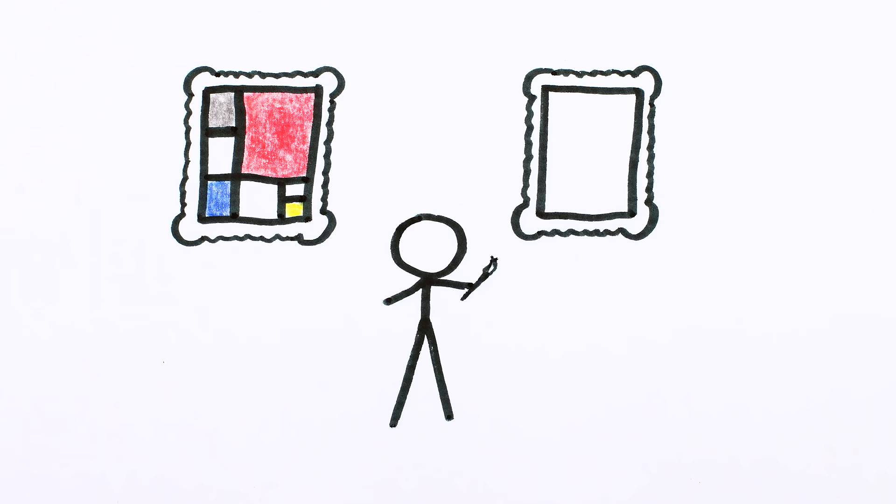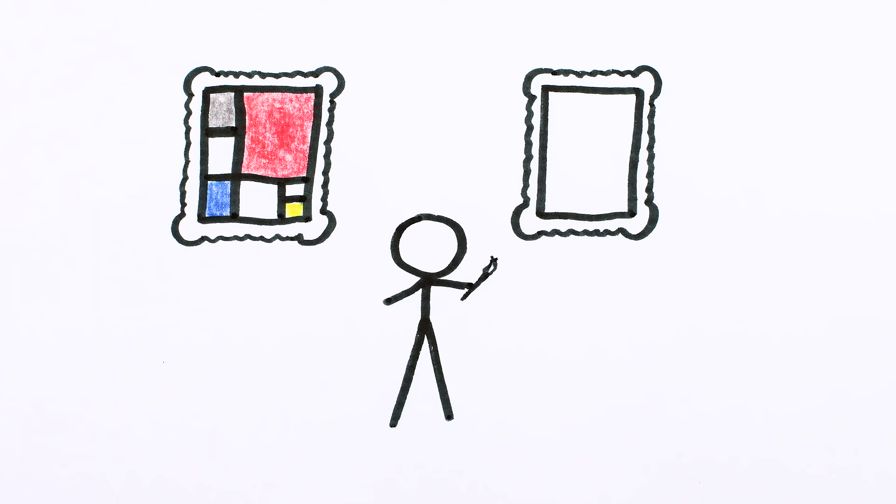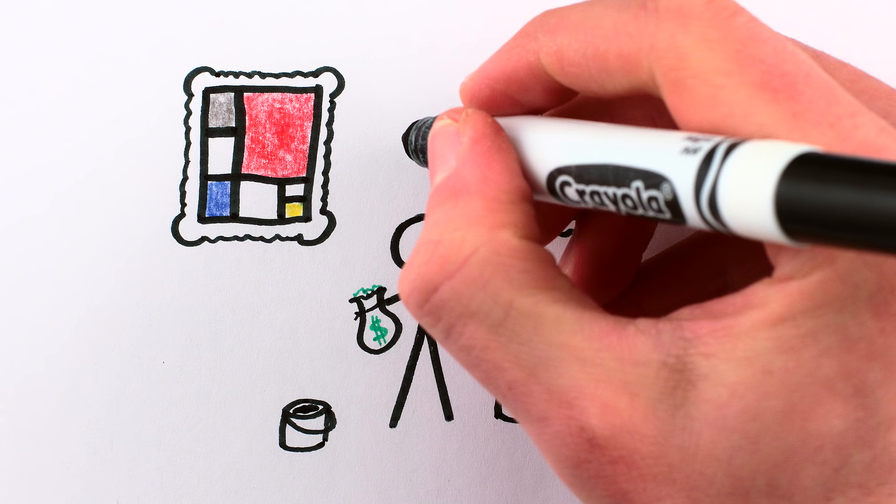To copy a famous painting, you need a blank canvas, a brush, and the right colored paints. And then you carefully put paint on the blank canvas to match the original as closely as you can, and hopefully sell it for a lot of money.